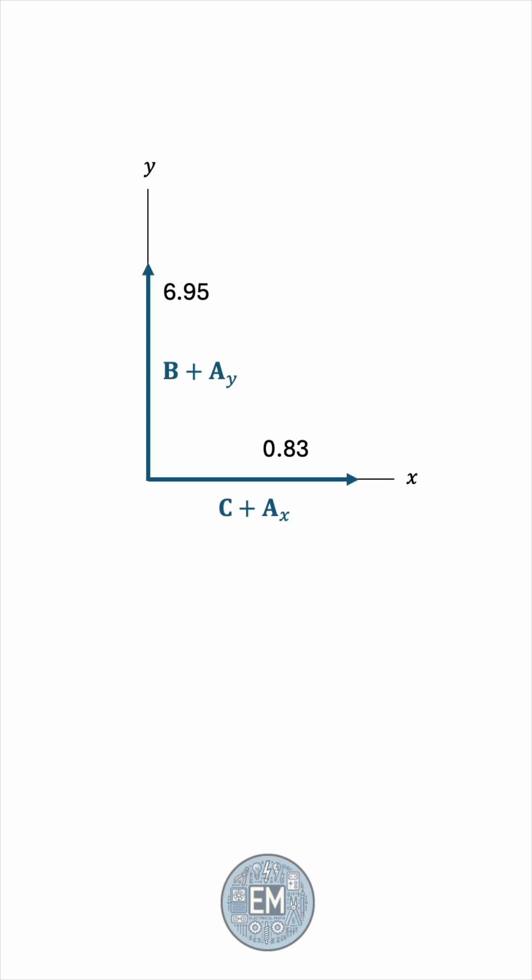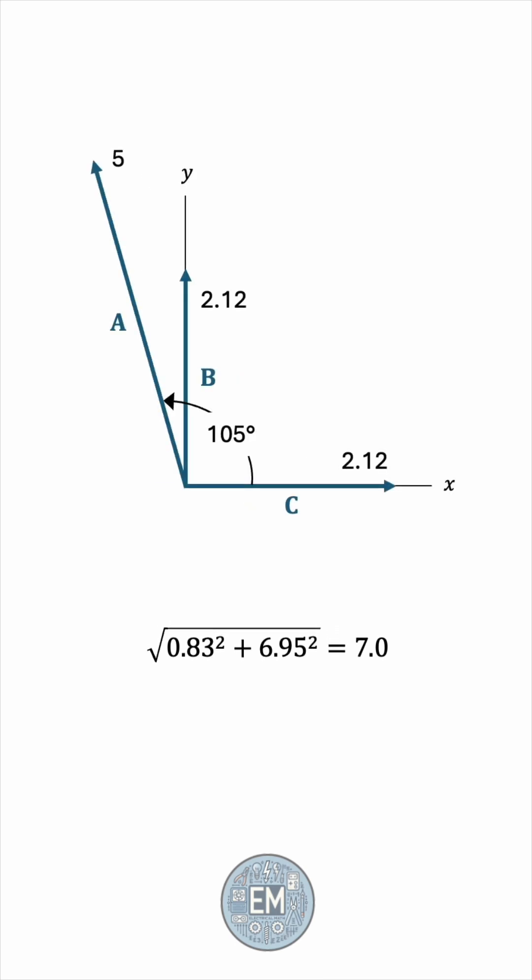And now we can find the magnitude of the resultant by applying the Pythagorean theorem. This works out to be 7.0. So, the resultant vector of a, b, and c is approximately 7 units long.